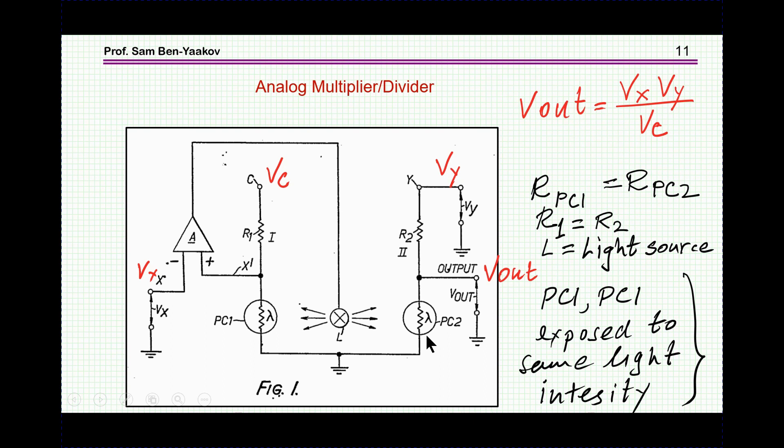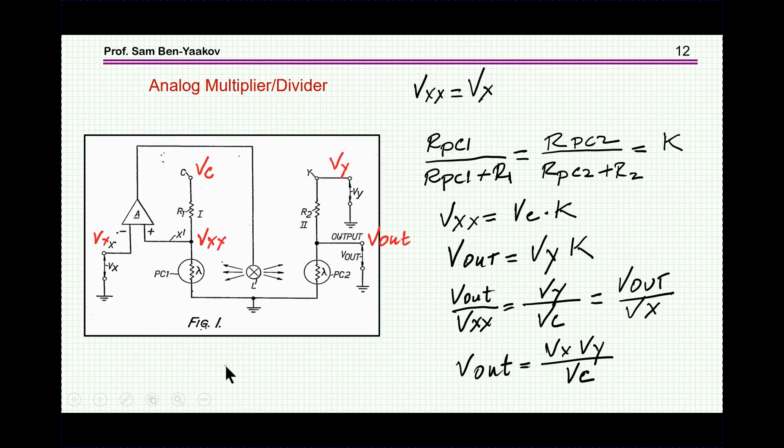So let's see how does it work. The assumption that is made here is that these two are matched in the sense that they follow each other, that is when they're exposed to the same light they'll have the same curve here. So there are two matched elements. And also I'll do the analysis assuming that R1 is equal to R2.